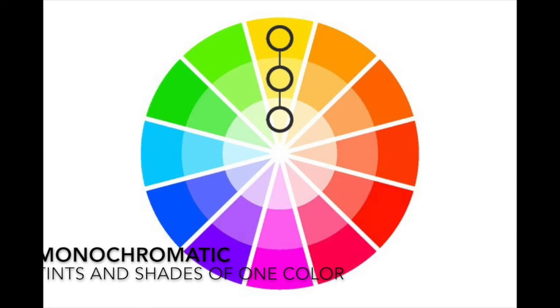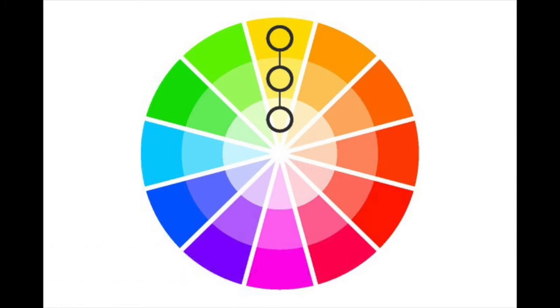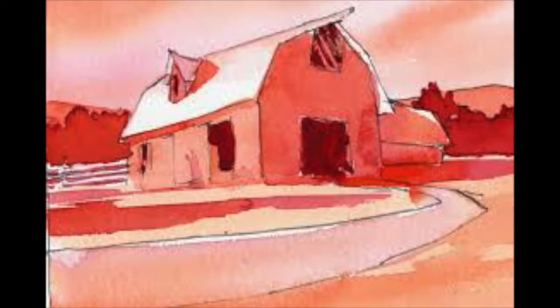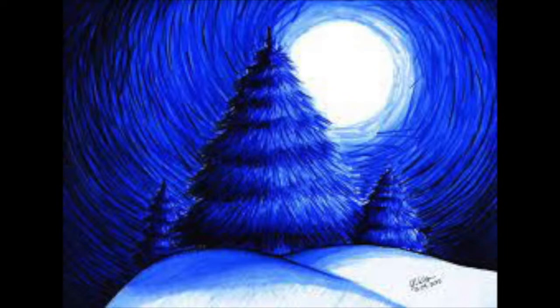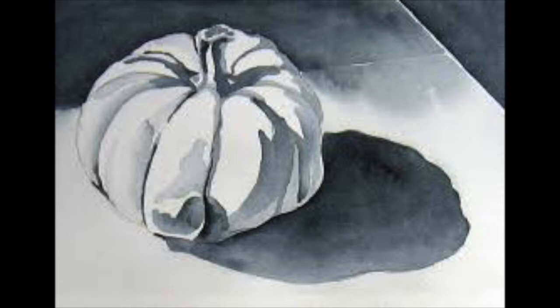Our first color scheme is called monochromatic. This is tints and shades of one single color or hue. Monochromatic color schemes are usually the most cohesive and unified, and they can provide a sense of balance within your artwork.